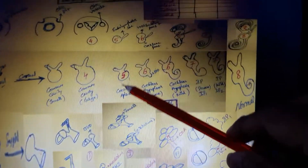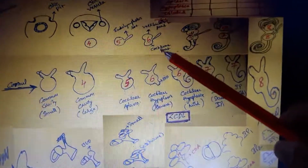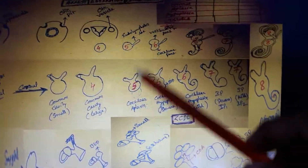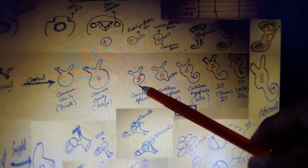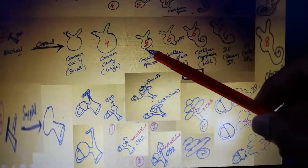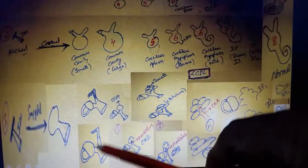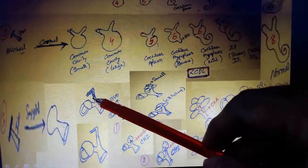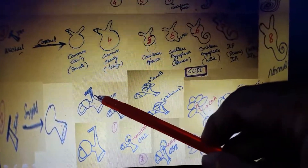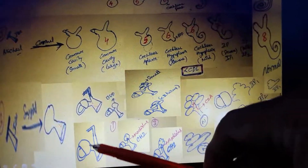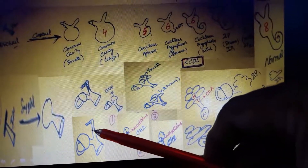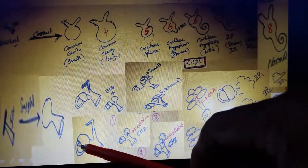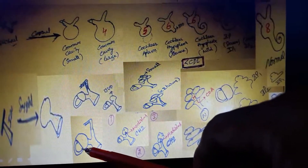Coming to cochlear aplasia: there is no cochlear part development in embryogenesis, arrest happening at the fifth week. In the axial view, anterior to the internal auditory canal, there is no cochlea — only the facial nerve is present there. Only the vestibule and lateral semicircular canal are present.